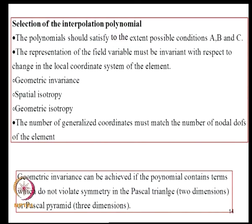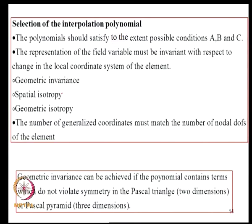Issues in selecting the interpolation polynomial include: satisfying conditions A, B, and C; and ensuring that the representation of the field variable is invariant with respect to change in the local coordinate system. If axes X, Y, Z are renamed, the element behavior should not change. This is known as geometric invariance, spatial isotropy, or geometric isotropy.